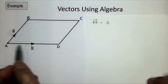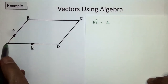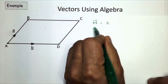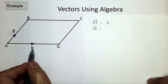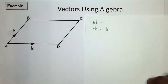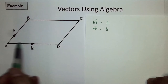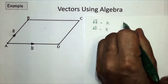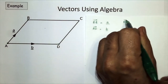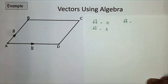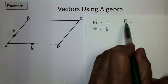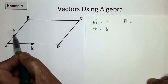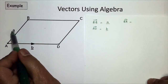To go from A to D - capital A to D - it's vector b. Now, to go from B to A, capital B to capital A, I can draw the arrow above indicating the direction I'm going. Because I'm going in the opposite direction to the arrow, I'm going to write down minus a.